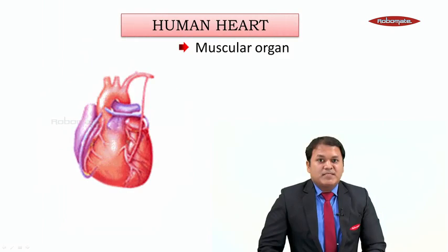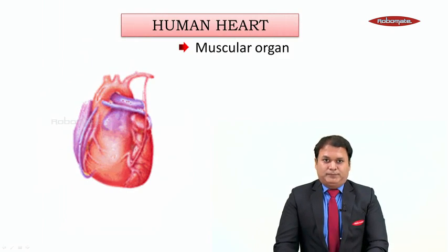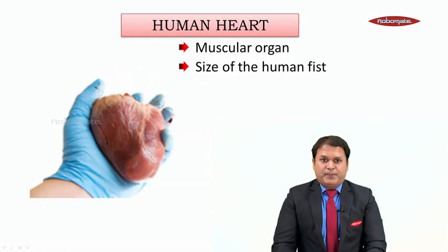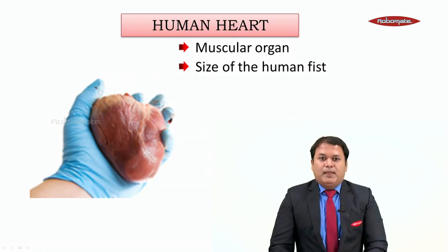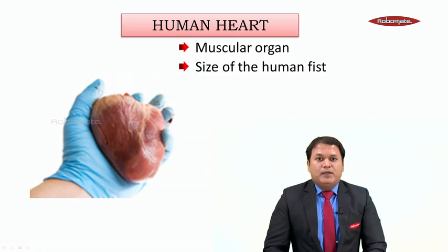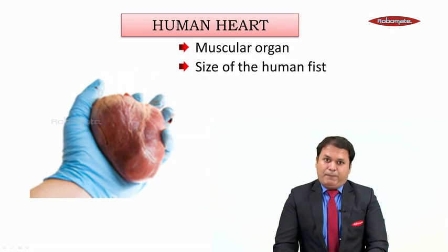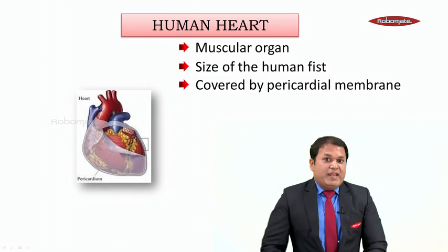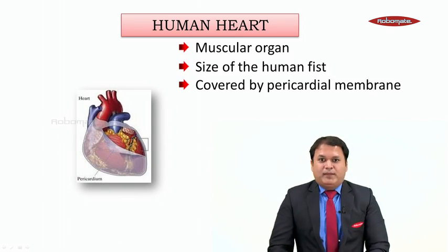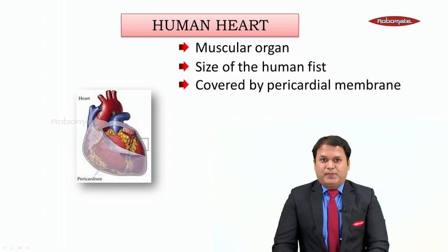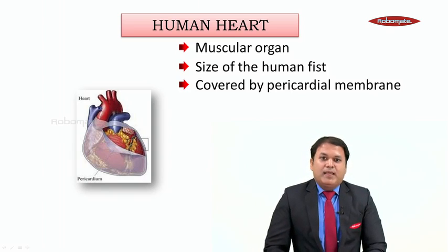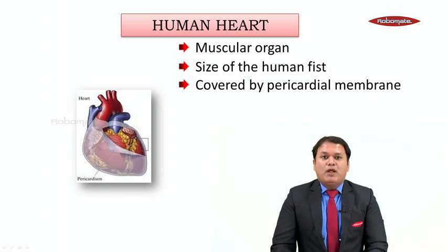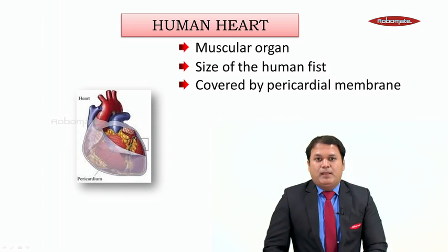The human heart is a muscular organ, meaning it is completely made up of muscles. The size of the heart is approximately that of the human fist. Since the heart is a very important organ, it requires protection. Our heart is covered by a covering which is called the pericardial membrane.